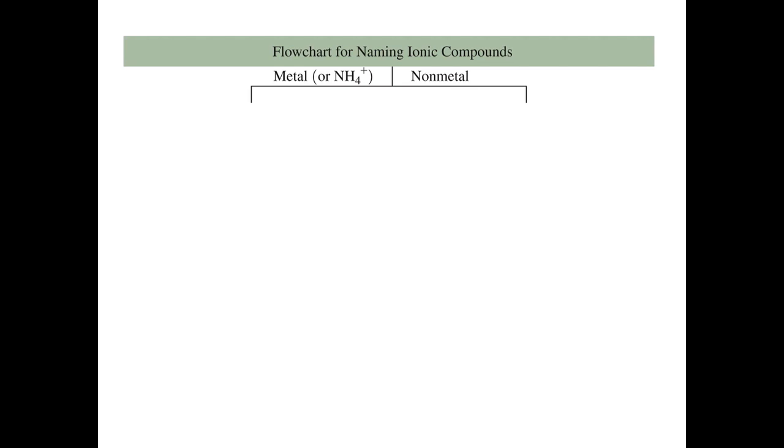Okay, so let's have a summary of how to name ionic compounds. Hopefully this full chart will help you get the hang of things. First, in ionic compounds, you must realize that there is going to be your cation and your anion. Your cation will be a metal or NH4 and your non-metal.